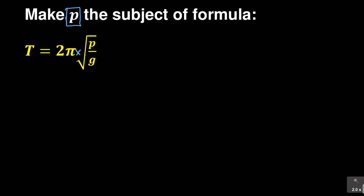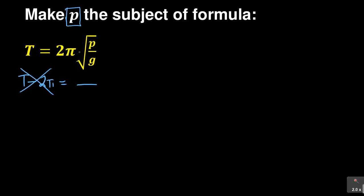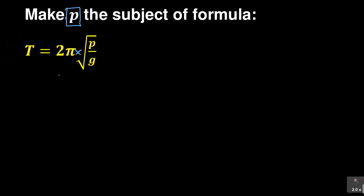Don't be tempted to take this two pi so that it crosses the equal sign, giving you t minus two pi equal to whatever — that method is wrong. Why? Because you have a multiplication sign there. The only time you can take two pi to the other side is when there is a negative or positive sign. If there is a multiplication sign, the only thing to do is the opposite of multiplication, which is division. So you divide by two pi on both sides.